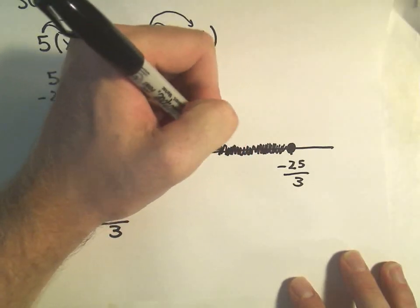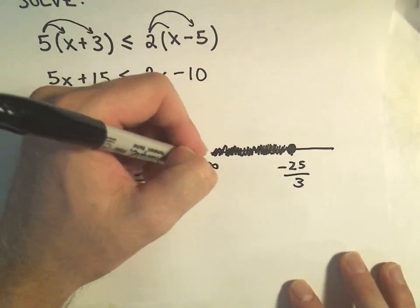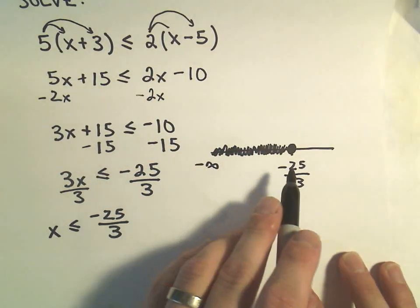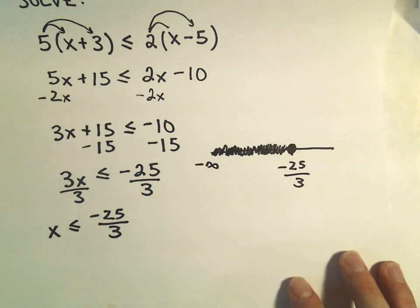So we would just keep going, going, going, going, going forever. Negative infinity. So again, just to indicate that you go arbitrarily far to the left.